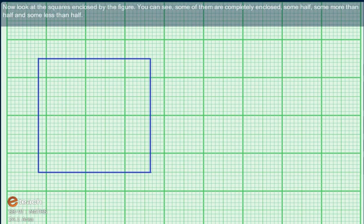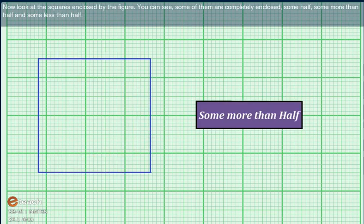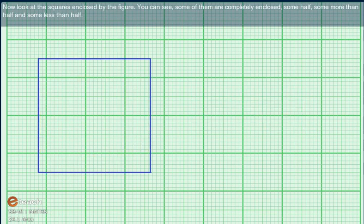Now look at the squares enclosed by the figure. You can see some of them are completely enclosed, some half, some more than half, and some less than half.